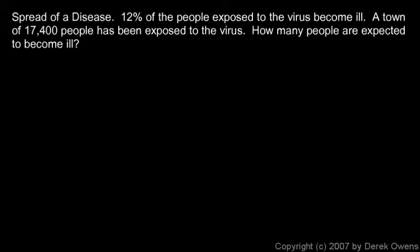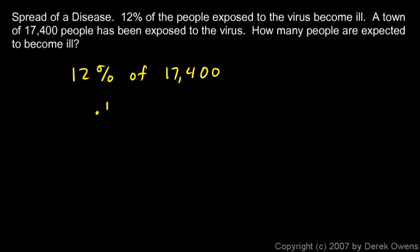The calculation in this case is pretty easy. 12% of the people exposed — there are 17,400 people exposed — so we just have to calculate 12% of 17,400. That's 0.12 times 17,400, and we just do the math: it comes out to 2,088.